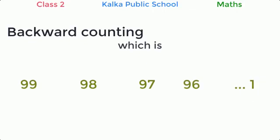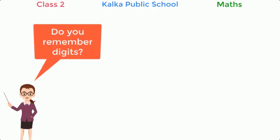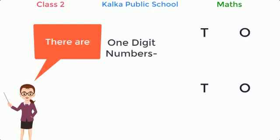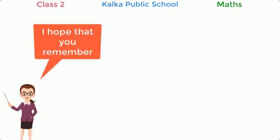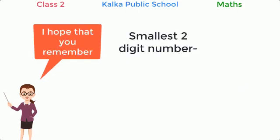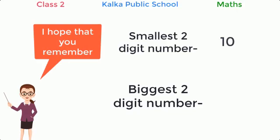Do you remember digits? There are 1-digit numbers only in the ones place. Then there are 2-digit numbers with numbers in both the tens place and ones place. I hope you remember that the smallest 2-digit number is 10 and the biggest 2-digit number is 99.